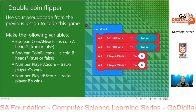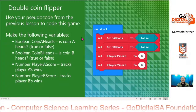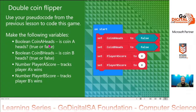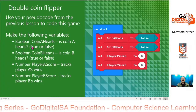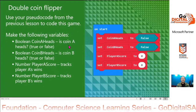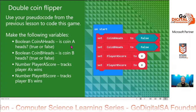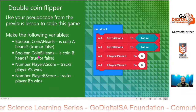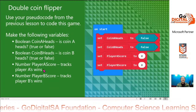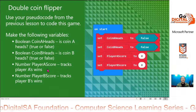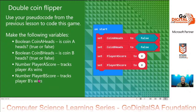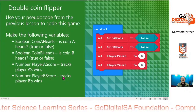You use your pseudocode from the previous lesson to code this game. You'll make the following variables. Boolean: we have a variable called coin A heads — is coin A heads true or false? This variable will be set to true or false depending on whether coin A is heads. We'll have another variable, coin B heads — is coin B heads true or false? The number player A score tracks player A wins, and a number variable player B score tracks player B wins.